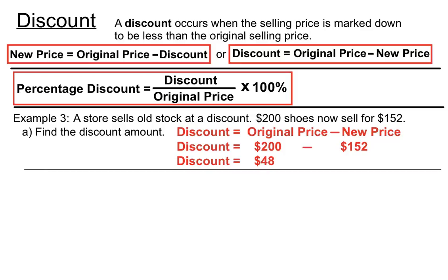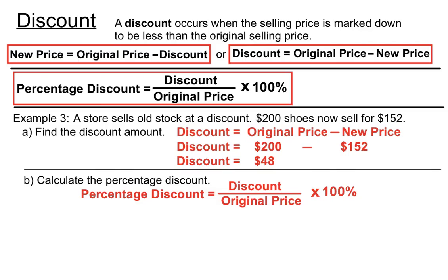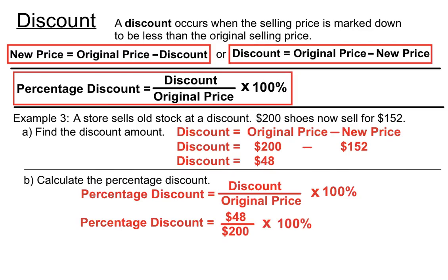To find the percentage discount, put the discount amount of $48 over the original price of $200, then multiply by a hundred. The percentage discount is 24%, so roughly a quarter of the price has been taken off. Instead of selling for $200, the shoes now sell for $152.